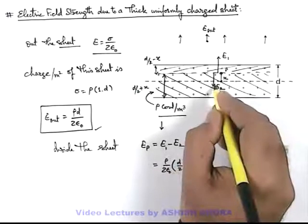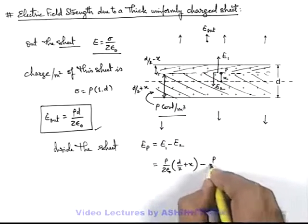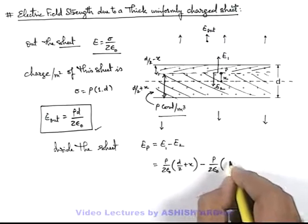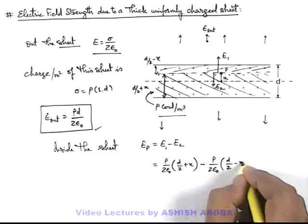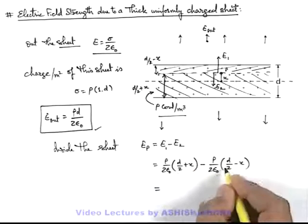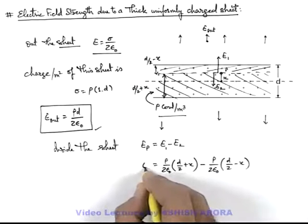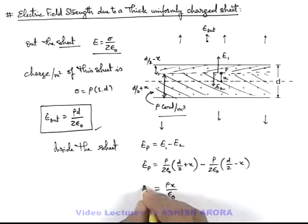Minus E₂ is the electric field strength at P due to a sheet of thickness d by 2 minus x, so it'll be ρ by 2ε₀, d by 2 minus x. On simplifying here this d by 2 term gets cancelled out, it'll be ρx by ε₀, which is the electric field at point P, or we can write it electric field inside the sheet.